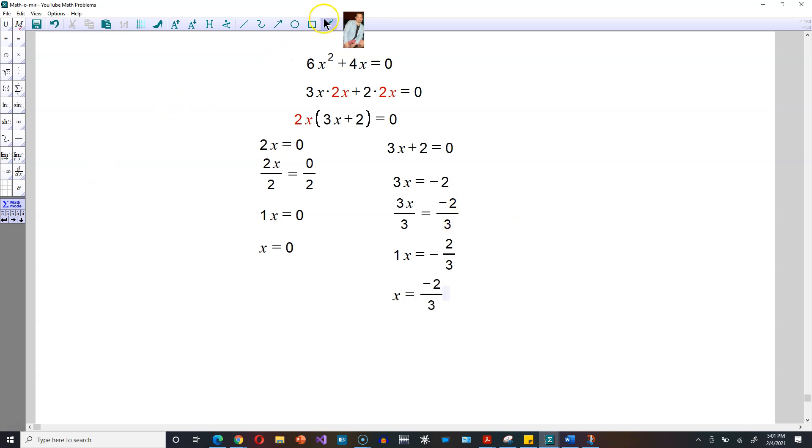So these right here are the solutions. x equals 0 is one of them, and then x equals negative 2 thirds is the other one. Please leave a like and subscribe. I'll see you in another video.